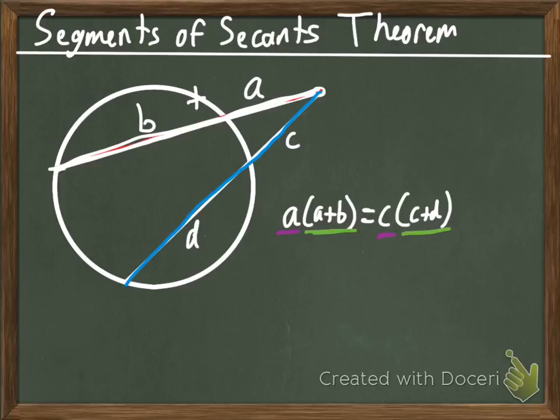So, we're going to take the external part, multiply it by the whole secant, which is the A plus B, and it's going to equal the other one's external piece times the whole secant, which is C plus D.